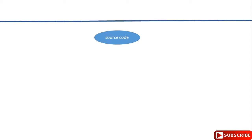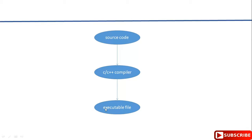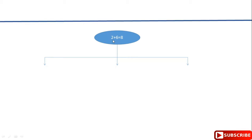If you take C or C++ languages as an example, in these languages as soon as source code gets compiled by the C or C++ compiler, those compilers will directly generate executable files. That means in C or C++ languages, if you compile source code, that source code will directly get converted into executable code, and this executable code will be generated based on which platform you have compiled on.